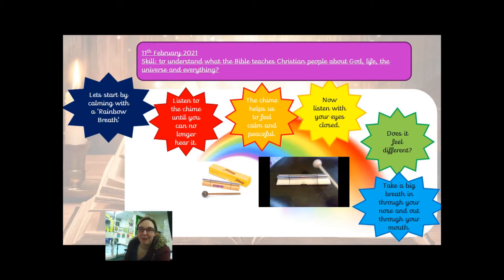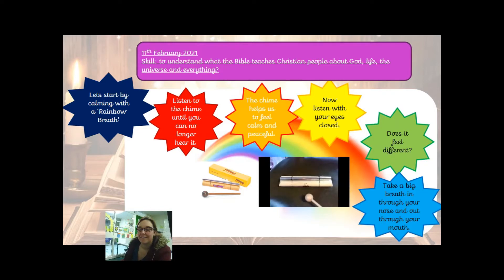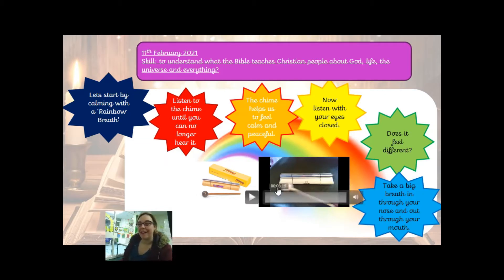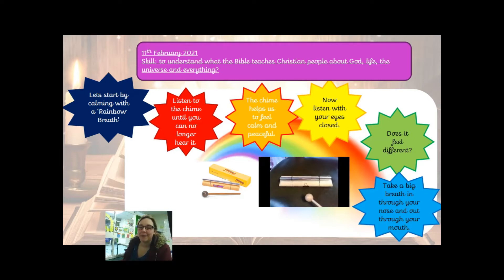We're going to start by calming with a rainbow breath. So listen to the chime until you can no longer hear it. The chime helps us to feel peaceful and calm. Close your eyes and listen. Now hopefully you did a big breath in through your nose and out through your mouth. Have a little go again. I don't know if you're relaxed, but I certainly am.